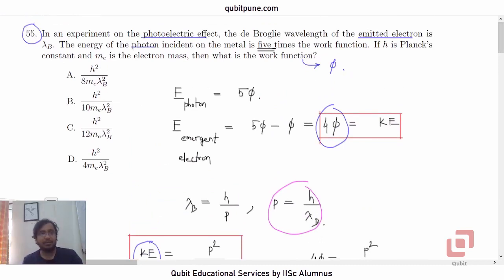In fact, all four options differ only in the constant in the denominator and that is eight, the right one. Ten, twelve and four are not going to work. So, 55 option A.